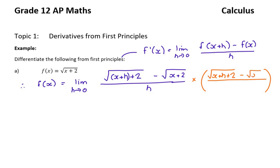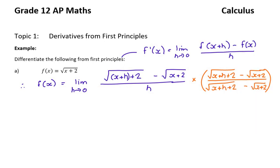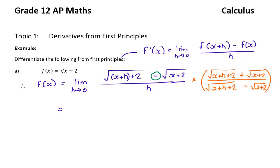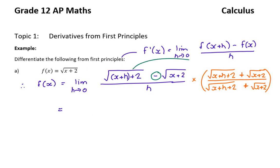So it's the limit as h tends to 0. Don't forget that f of x plus h just means, instead of writing x, you write x plus h. Minus x plus 2 over h. The only reason that they don't actually ask this in normal maths is that this requires an understanding of a conjugate.